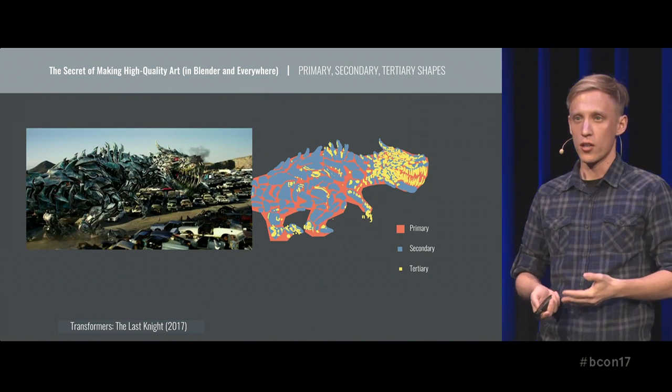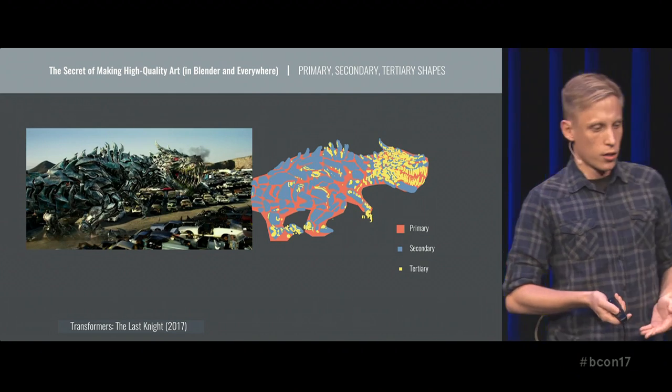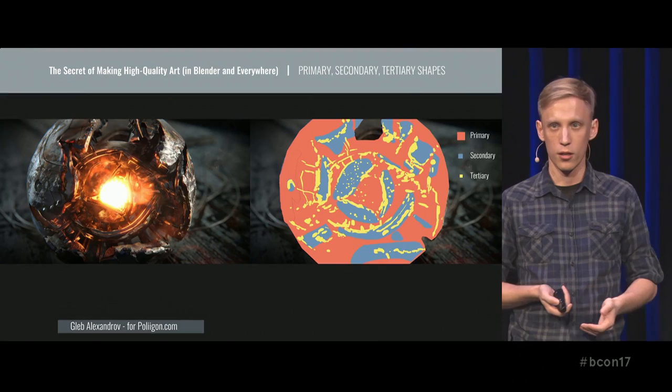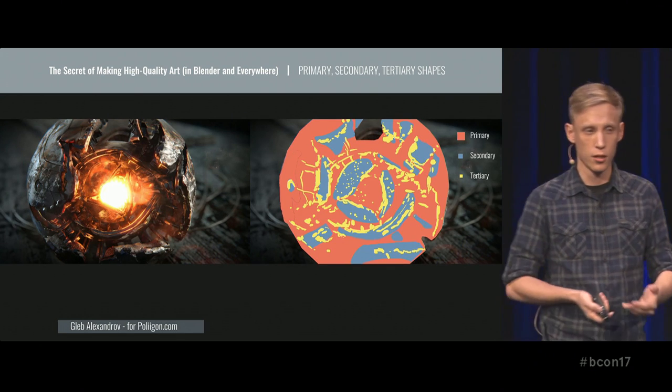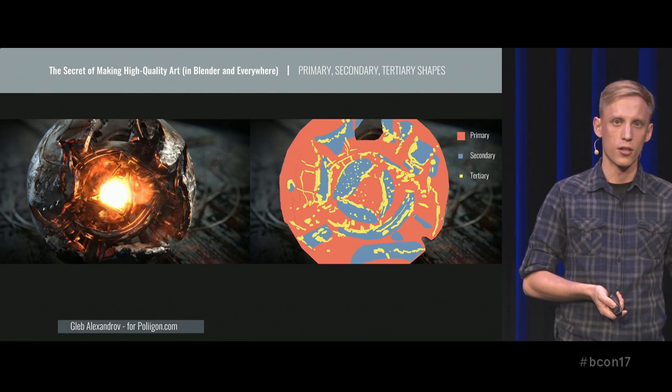Otherwise, you will create something like the Dinobots from Transformers: Age of Extinction — total rubbish. Imagine an orchestra where all musicians started playing at once with maximum loudness — this would sound just like that Dinobot, if you know what I mean. You just have to balance areas of detail with areas of rest. If I had to create a transformer, I would definitely include some empty space inside the composition, just to avoid this Dinobot effect.